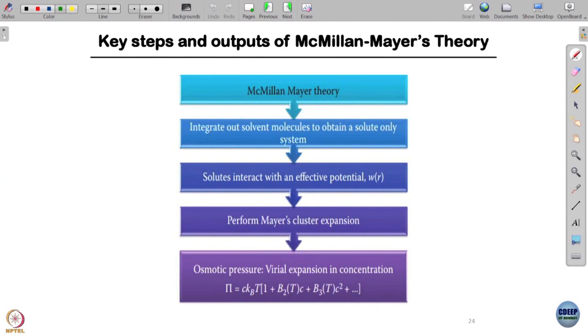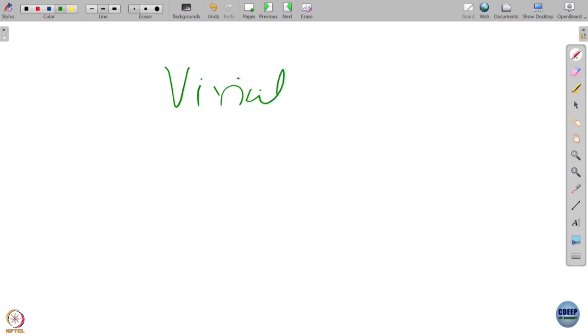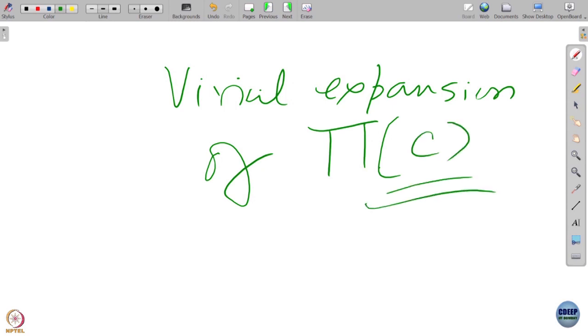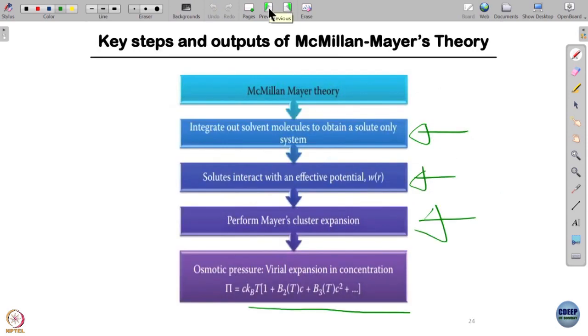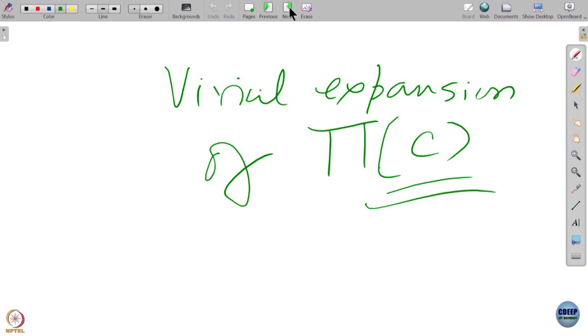The basic McMillan-Mayer theory with osmotic pressure gives this quantity, which is very important for explaining structure making, structure breaking, all non-ideality. This is a flowchart: integrate out solvent molecules to obtain solute system. Solutes interact with an effective potential W(r). Perform Mayer's cluster expansion. Once you do that, you get C is the concentration or mole fraction, you get the second virial coefficient. The osmotic pressure has a virial expansion. You have the concentration dependence. I can vary the concentration, vary temperature, and get B2(T).